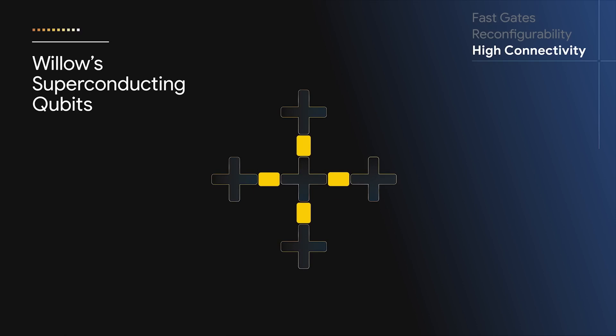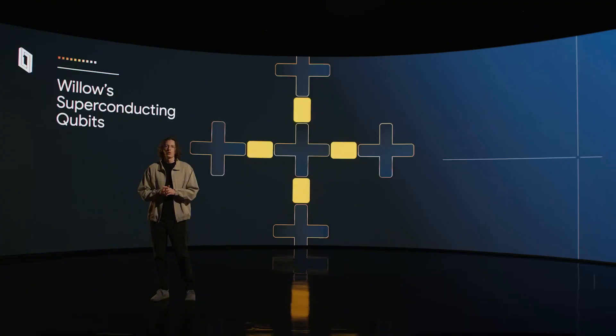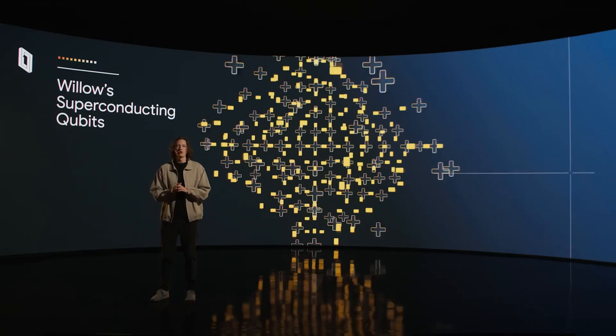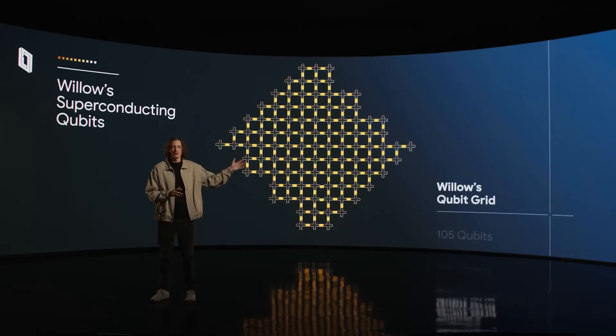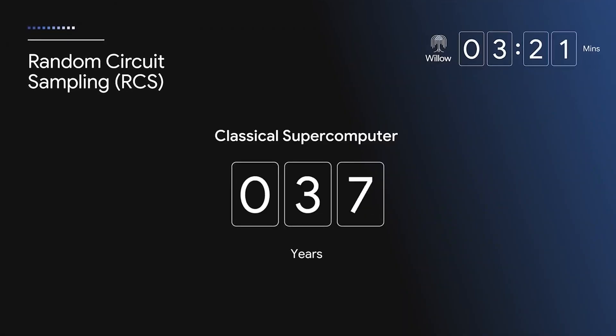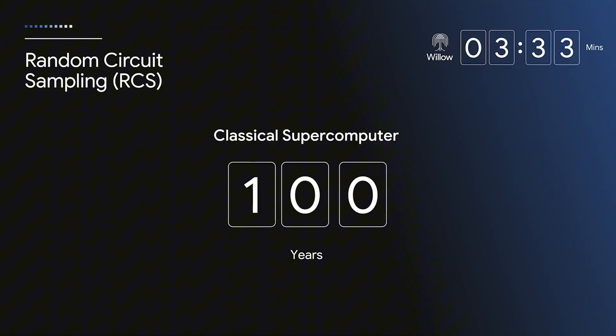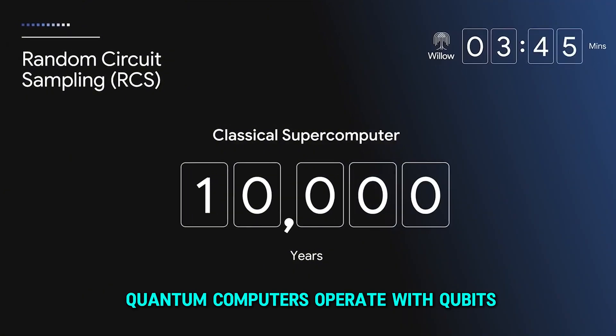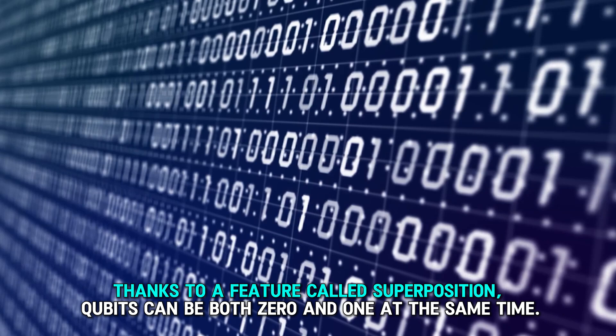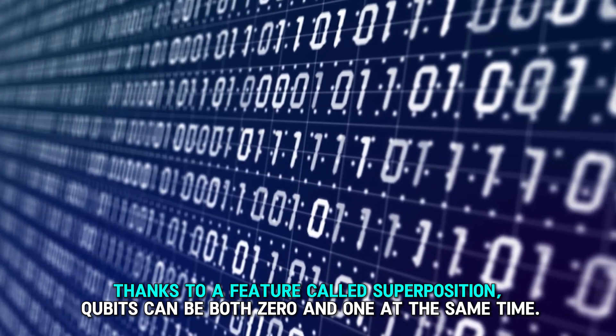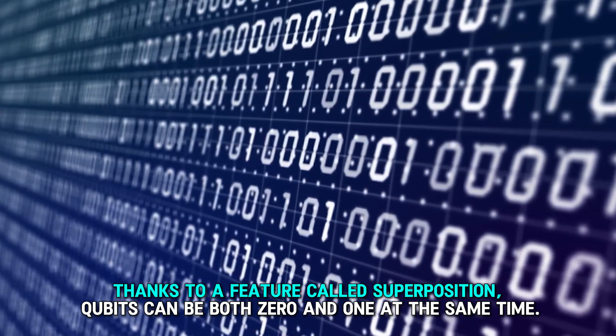Quantum computing dives into the strange and powerful world of quantum mechanics to tackle problems too tough for regular computers. While traditional computers work with bits that are either zeros or ones, quantum computers operate with qubits. Thanks to a feature called superposition, qubits can be both zero and one at the same time.